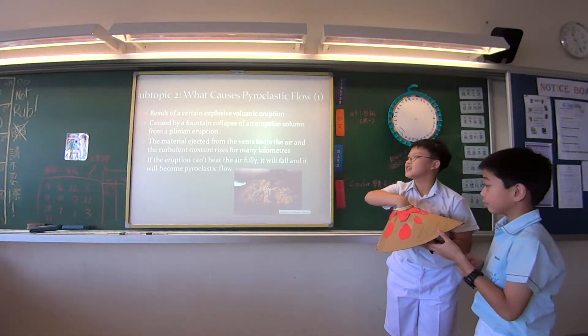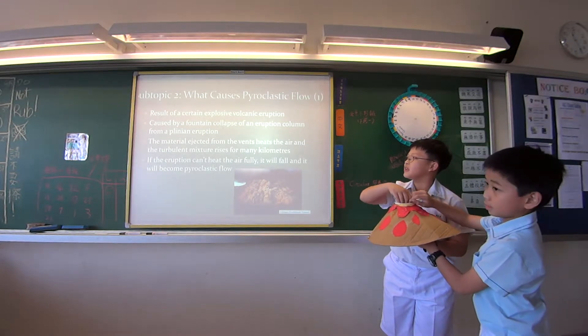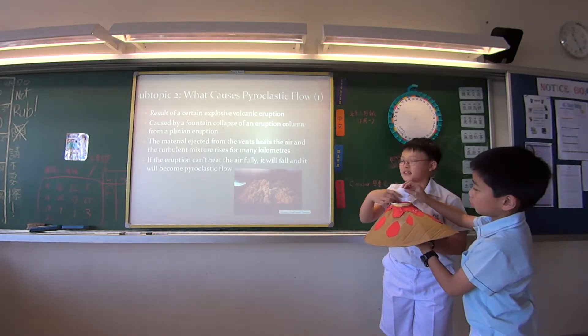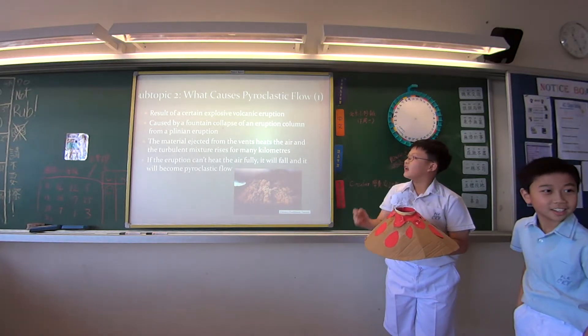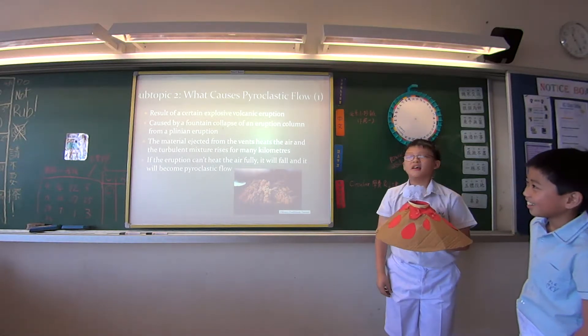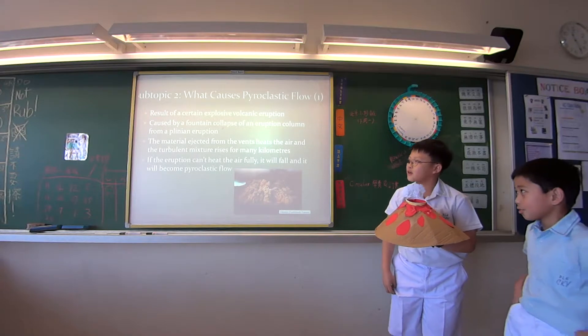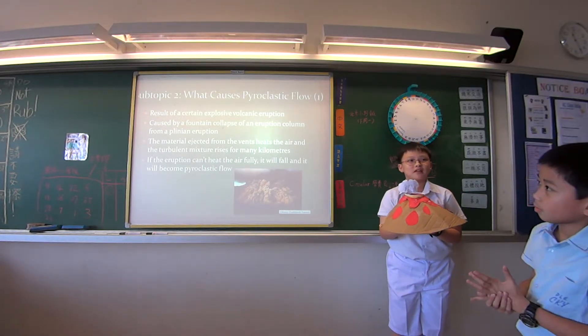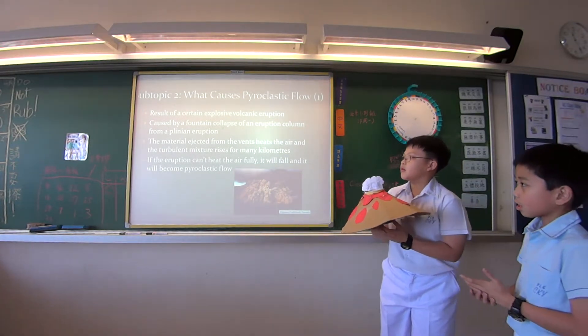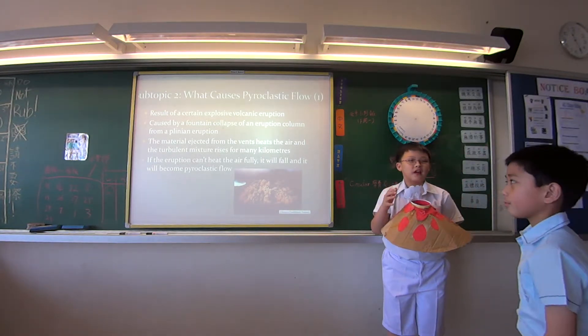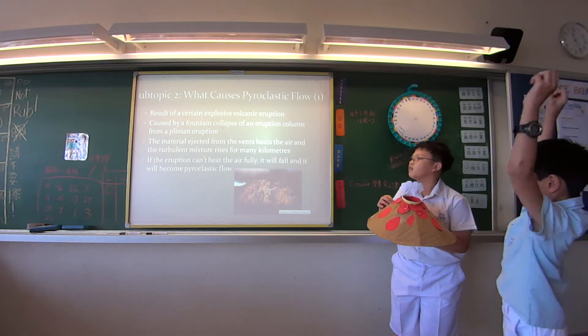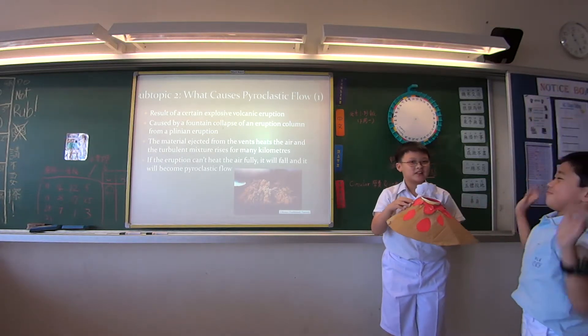The eruption ejects from the vents and heats the air around it, and the turbulent mixture rises for many kilometers. If the eruption can't heat the air fully, it is too heavy for the air to carry, and it will drop down, and it will become pyroclastic flow.